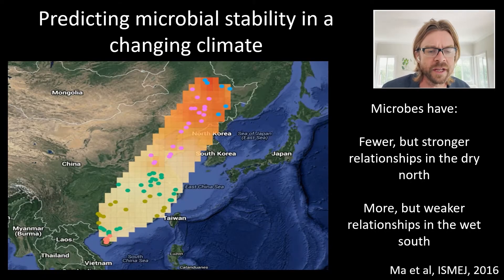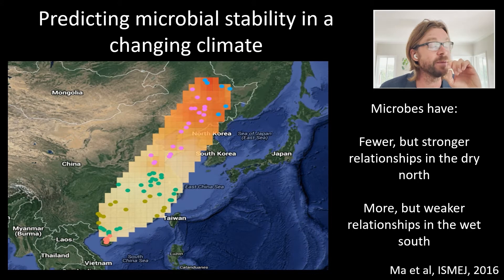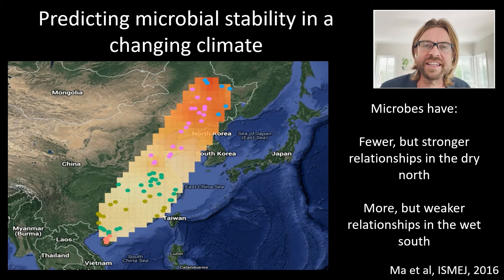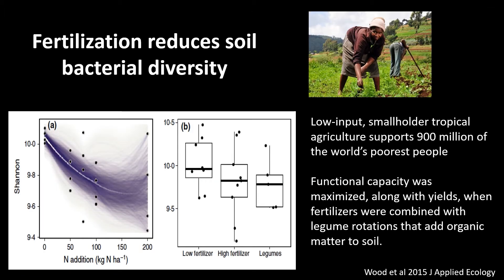This is a hypothesis, but work from Mary Firestone's group at Berkeley has really started to dig down, identify, and demonstrate those associations and prove their validity. Interestingly, when we get into agriculture, we can see that agricultural practice has a big impact upon the microbial system.